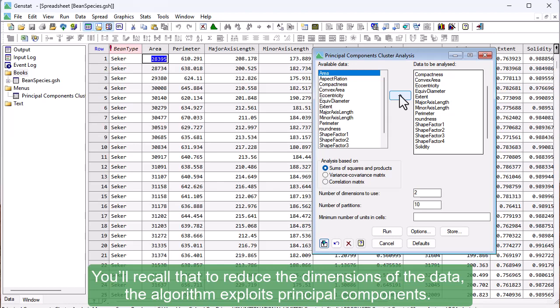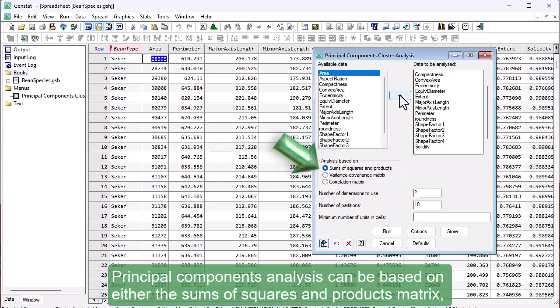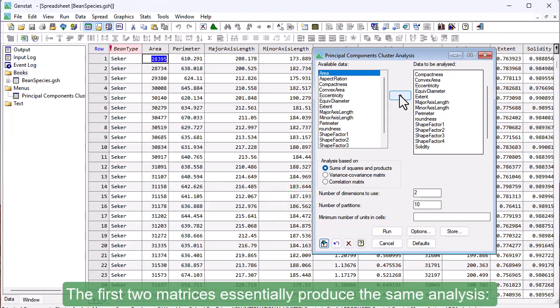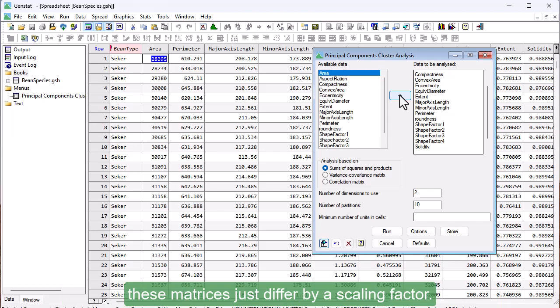Principal Components analysis can be based on either the sums of squares and products matrix, the variance-covariance matrix, or the correlation matrix. The first two matrices essentially produce the same analysis. These matrices just differ by a scaling factor. Conversely, if the correlation matrix is used, each variate is standardised by subtracting its mean and dividing by its standard deviation.